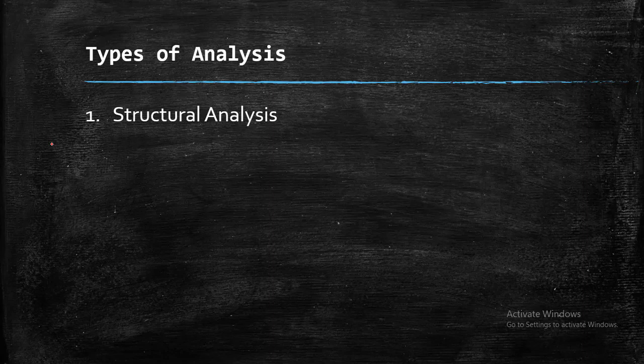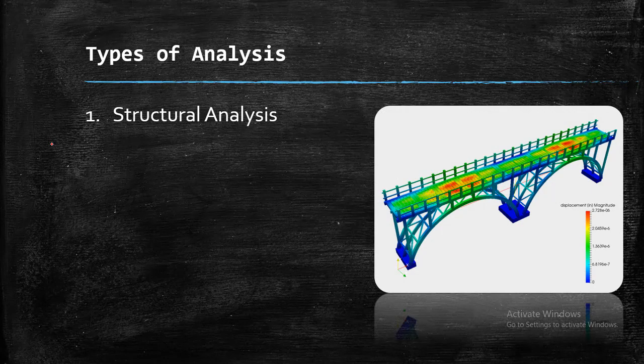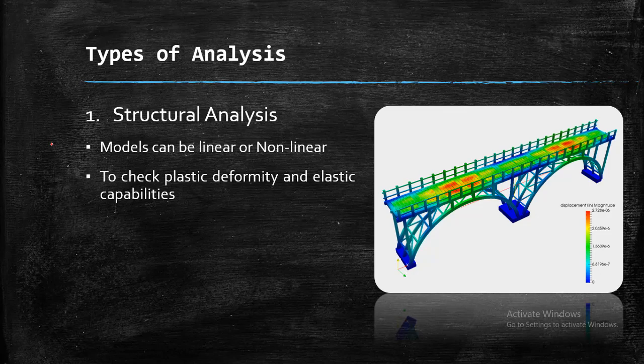The first type of analysis is structural analysis. Now this picture will be telling you what is structural analysis. This is a structure, a bridge structure you can see in the analysis. Structural analysis post-processing is done by using some of the software tools which I am going to discuss in the last slide. So now for structural analysis different models are used. The model could be linear or non-linear. We need those models to check the plastic deformity and elastic capabilities. When we use a linear model, then the plastic deformity we get. And when we use non-linear models, the elastic capabilities in the sense of stresses and strain we get. So this is structural analysis.